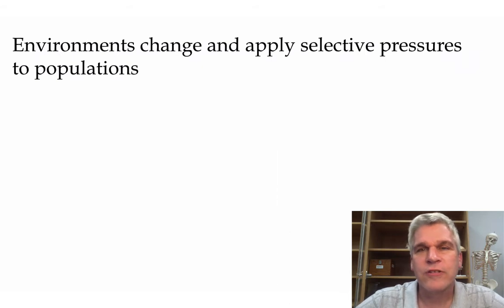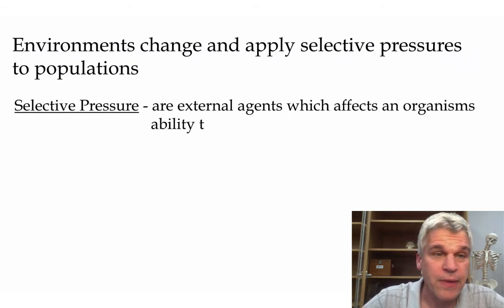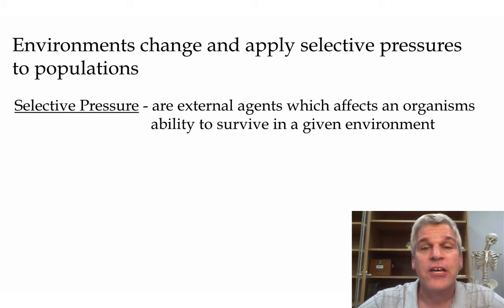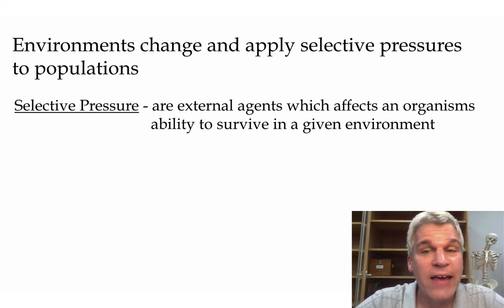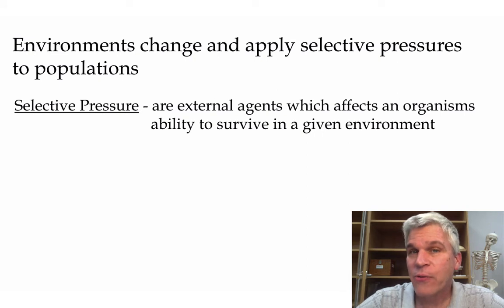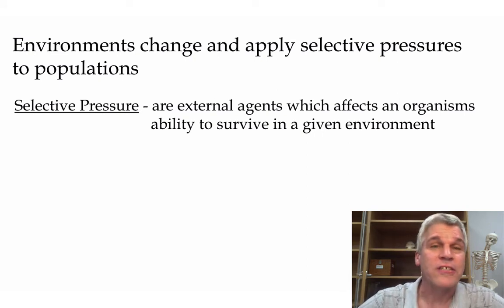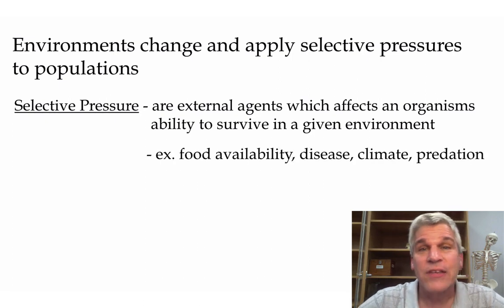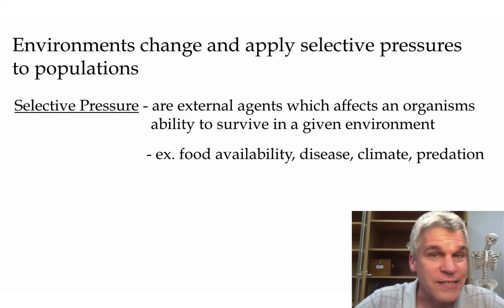When we talk about natural selection, we're going to talk about various types of selective pressures. A selective pressure is an external agent which affects an organism's ability to survive in a given environment — what is either allowing that individual to survive, or what might be causing that individual to not have as great a chance at surviving. These can be things like how much food is available or the type of food that's available.